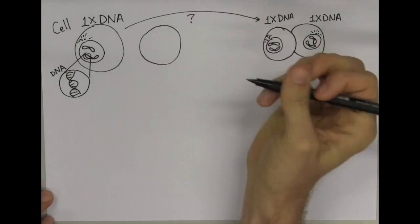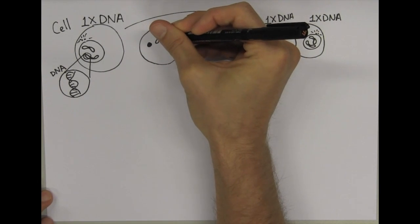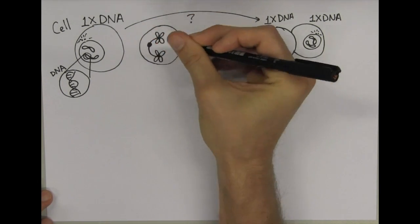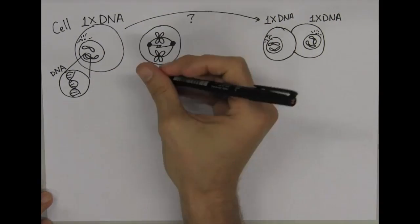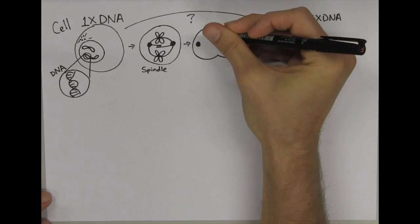To accomplish this, the cell builds an apparatus called the mitotic spindle, which comprises two organizing centers that connect to the DNA via microtubules. The DNA is then aligned along the metaphase plate, and identical DNA sets are pulled apart towards opposite poles.